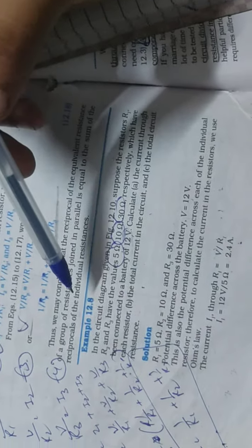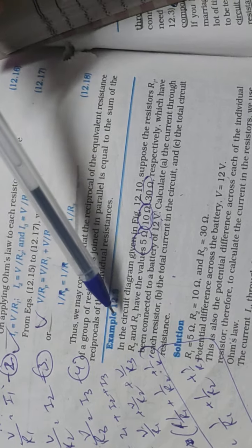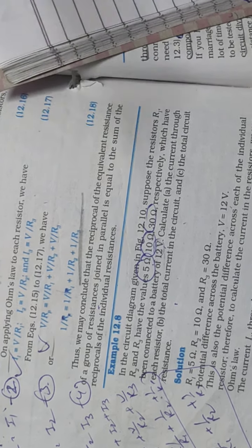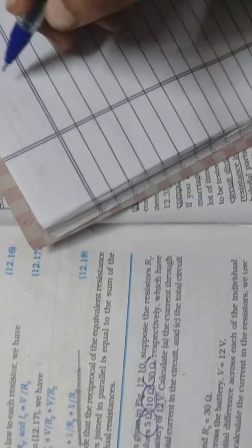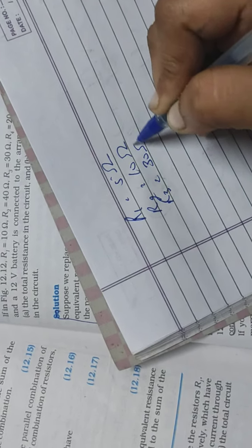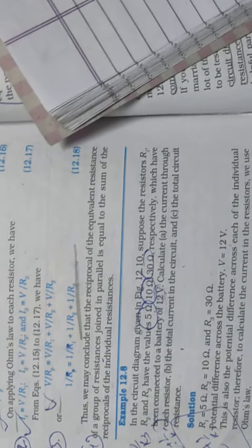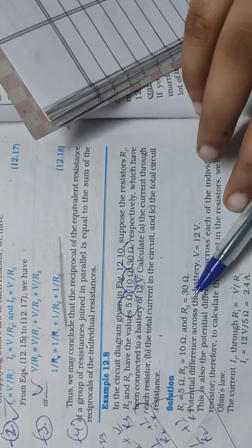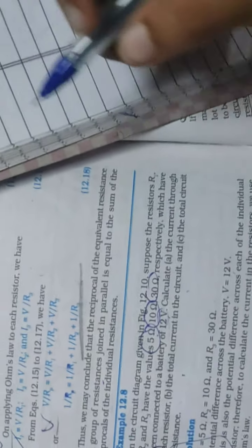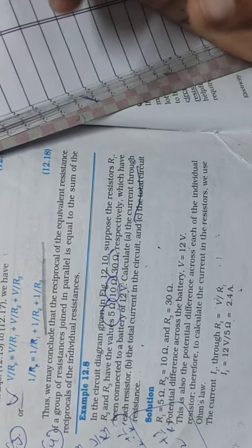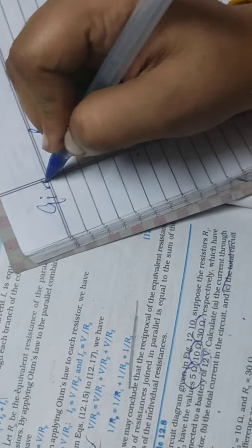In the circuit diagram, suppose the resistors R1, R2, R3 have the values 5 ohm, 10 ohm, 30 ohm. So the resistors are R1 has value 5 ohm, R2 has value 10 ohm, and R3 has value 30 ohm.